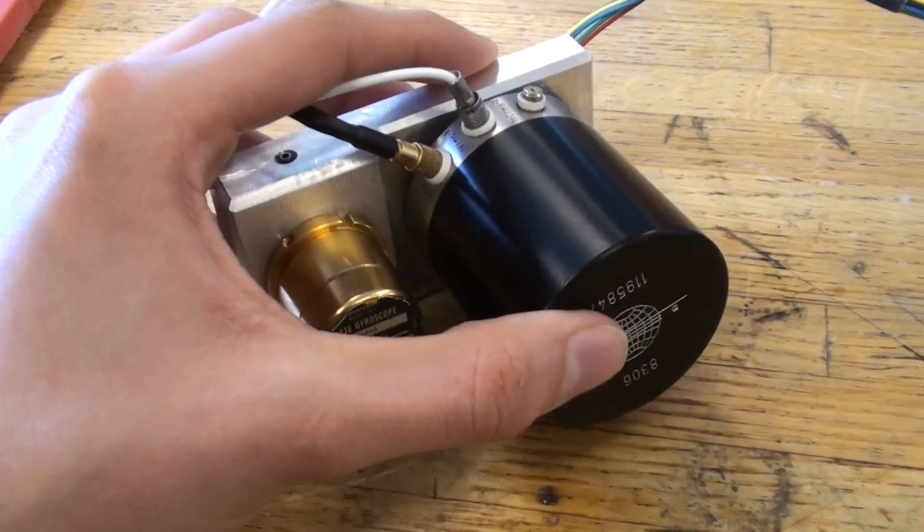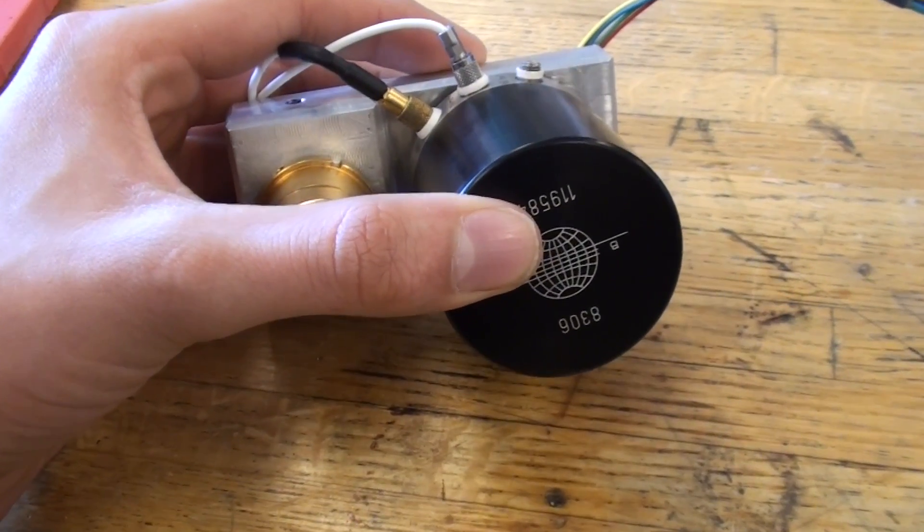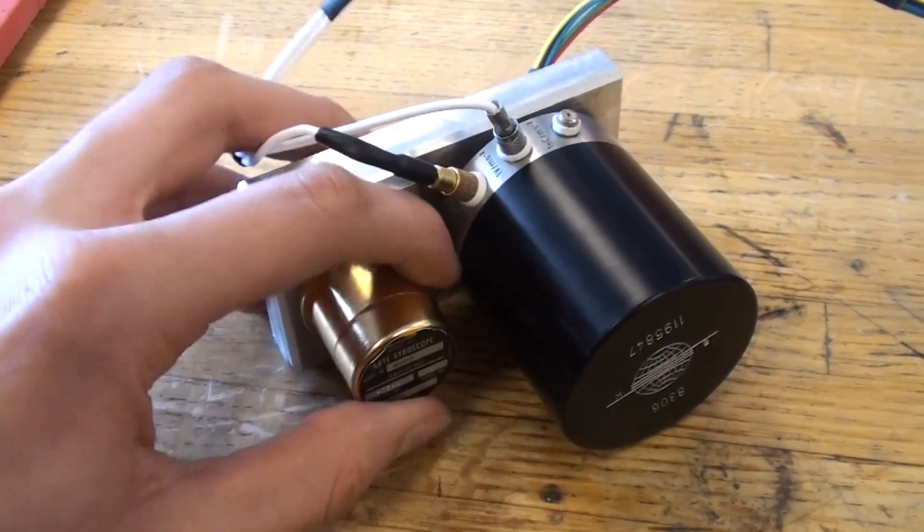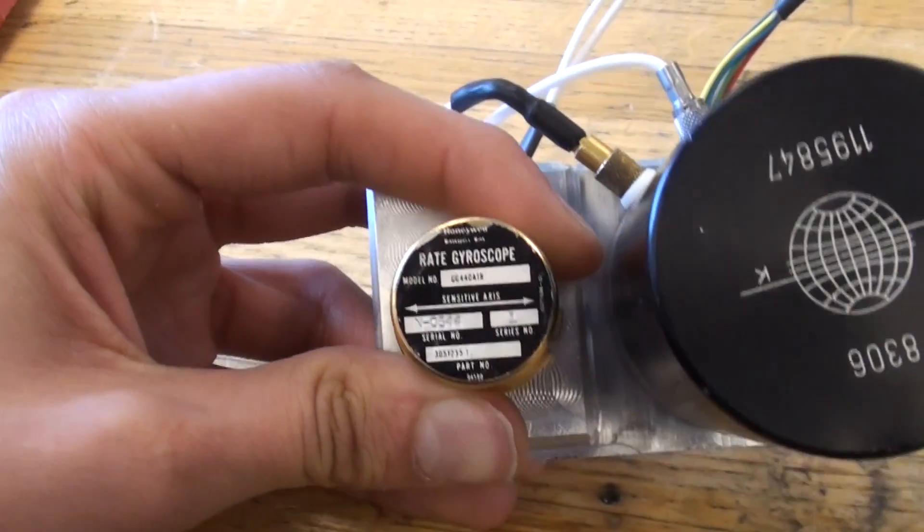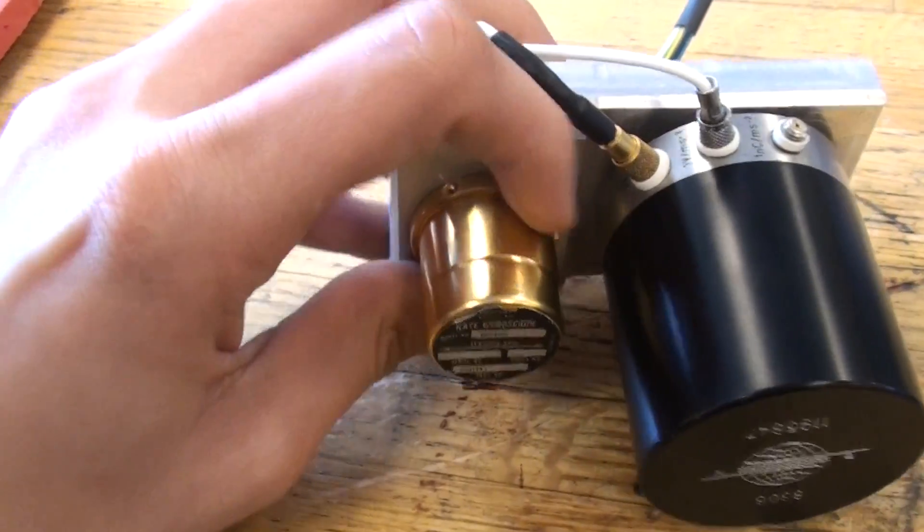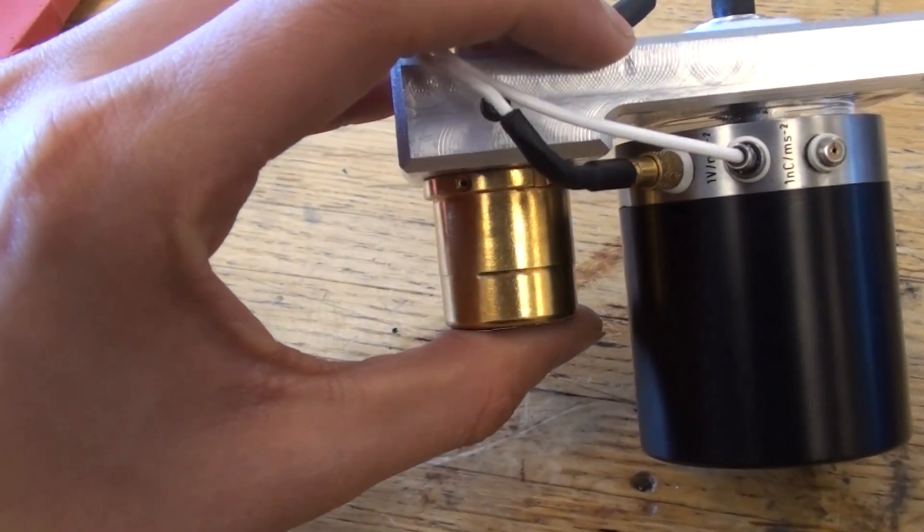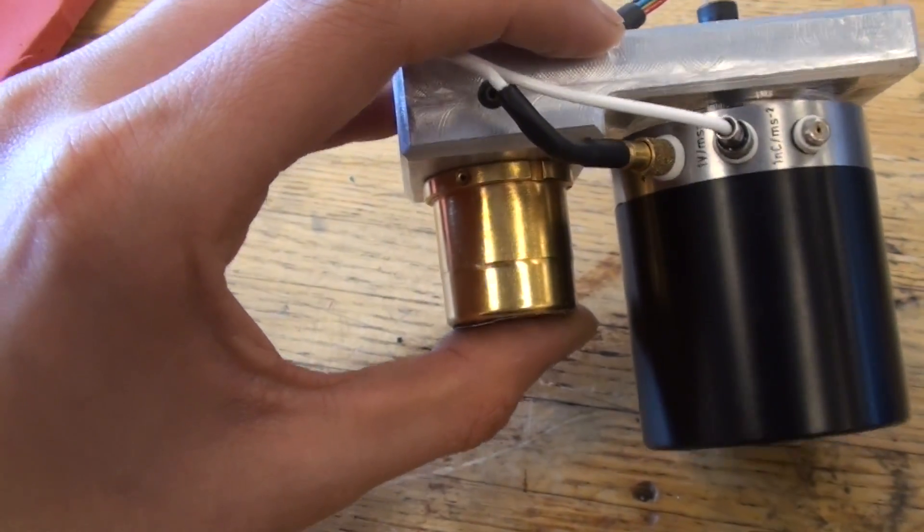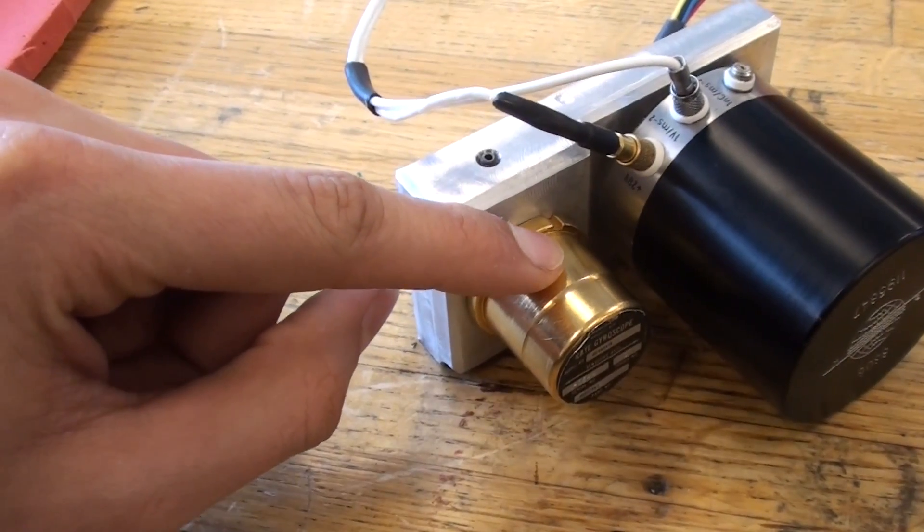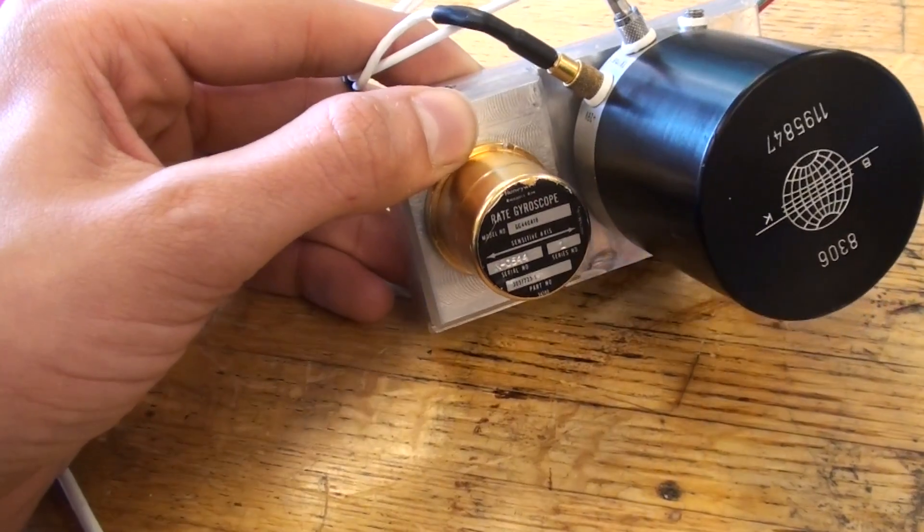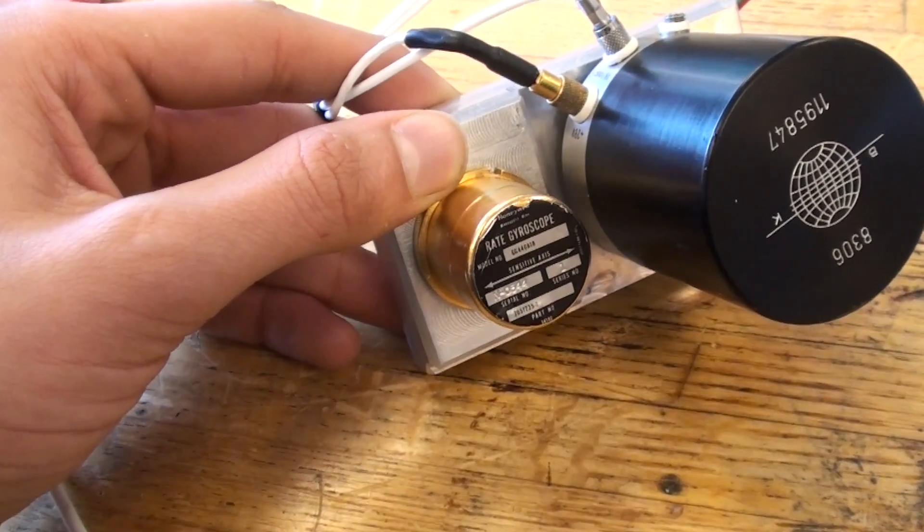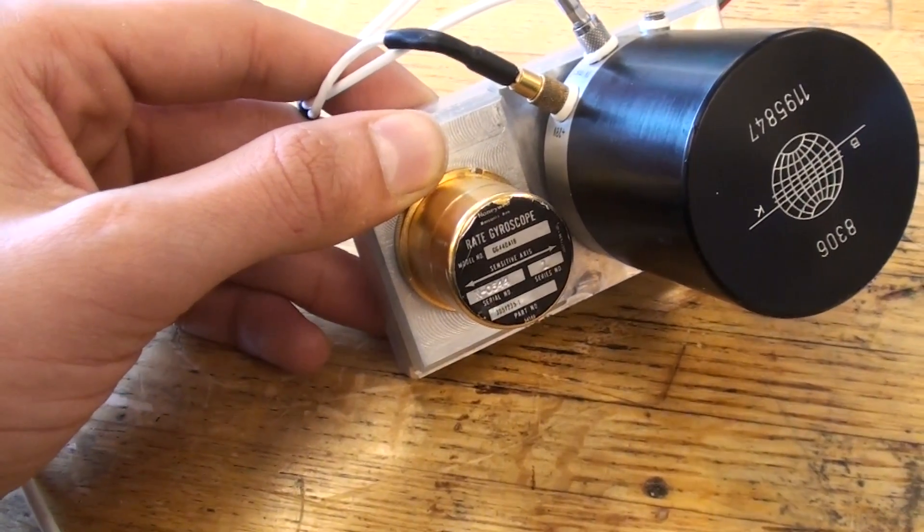This here is an accelerometer. It's sensitive to plus minus 10 Gs with 0.02 milli-G resolution. Ridiculously sensitive. This guy here is a gyroscope. It's a rate gyroscope built in 1961 by Honeywell. Inside is a motor, a differential transformer, which itself is part of the motor, some coils, some oil, and some really fancy micromachining, which originally cost $15,000 in today's money.